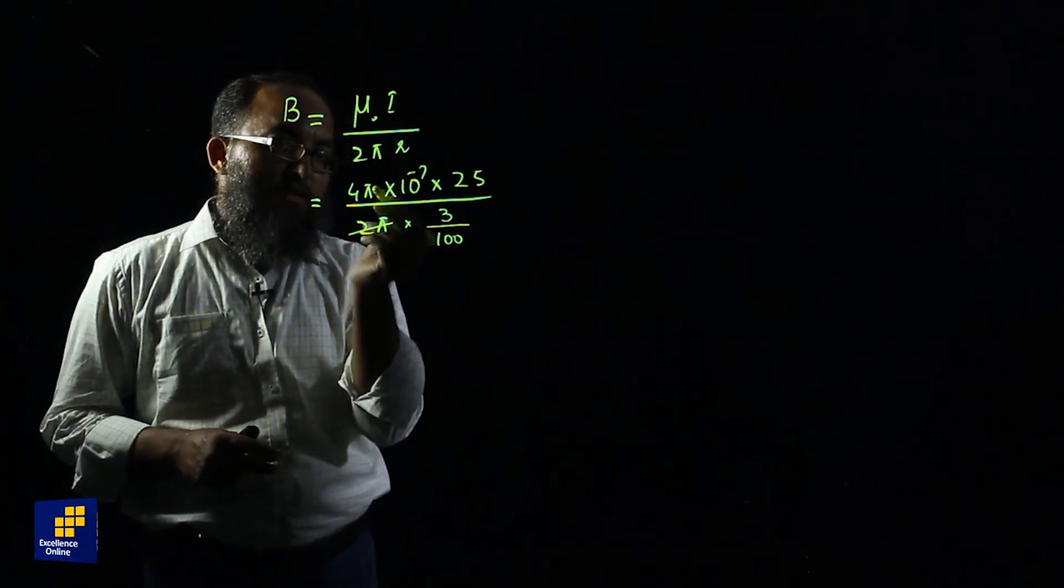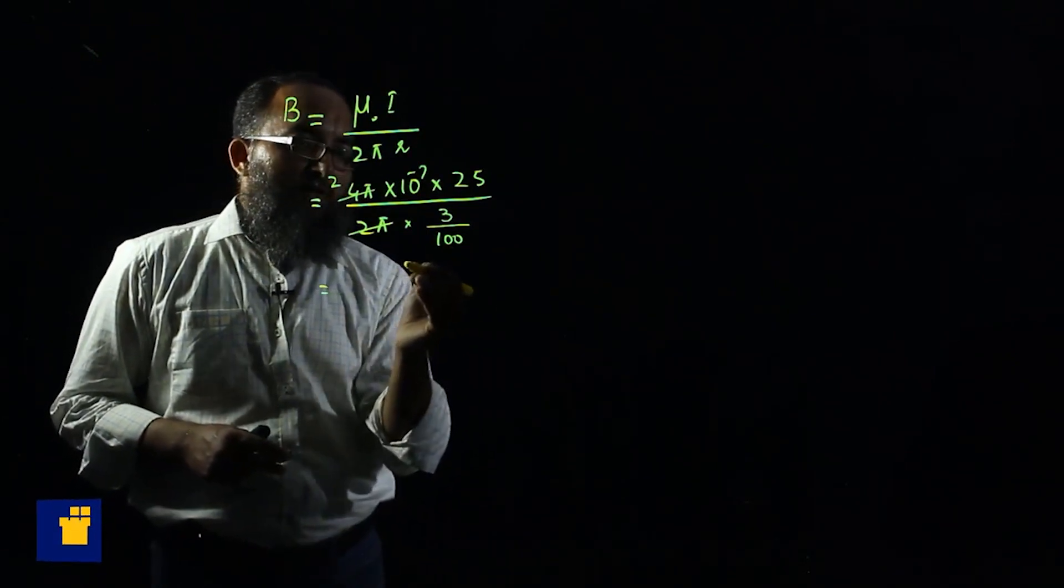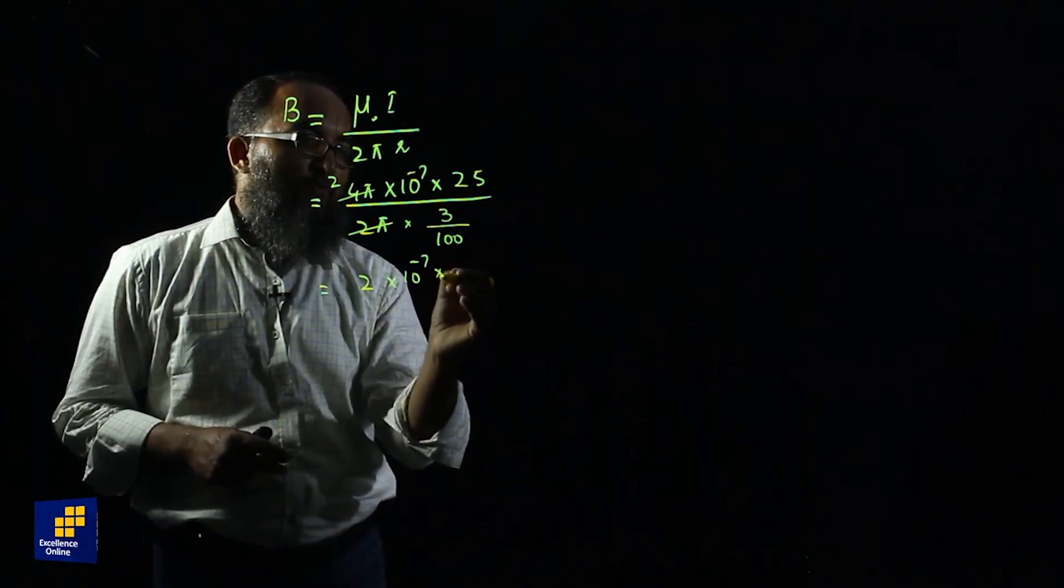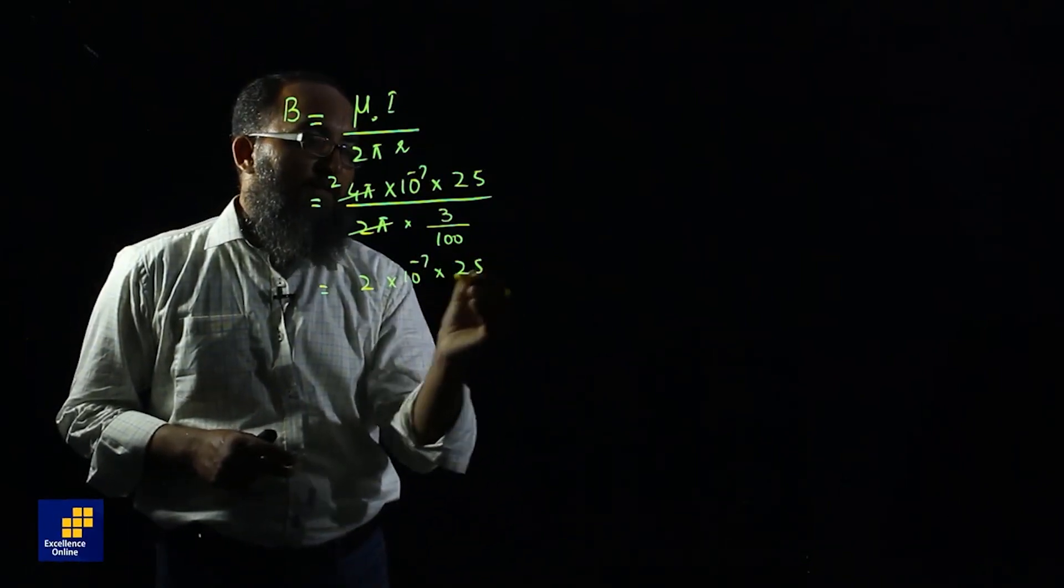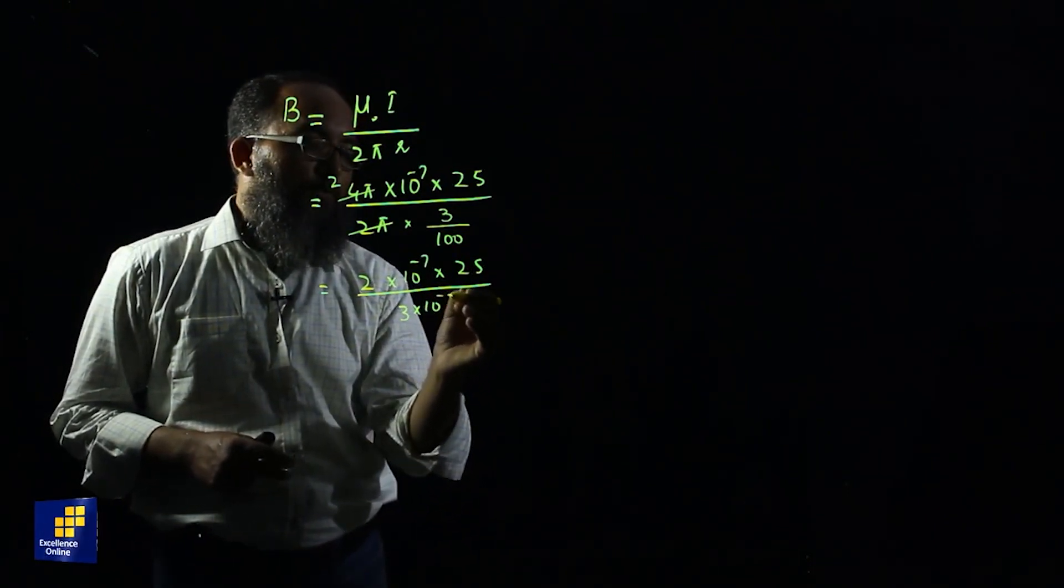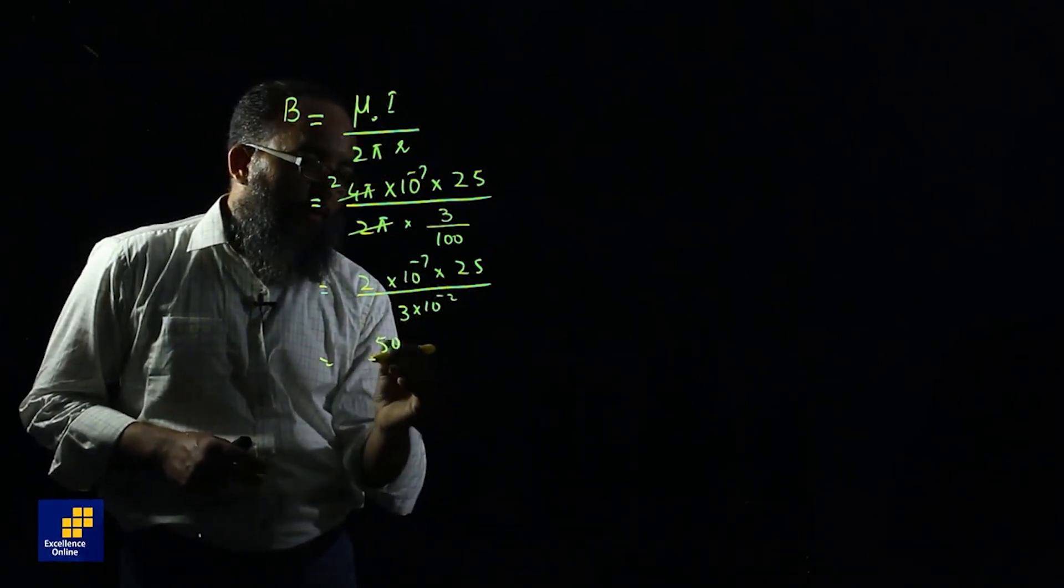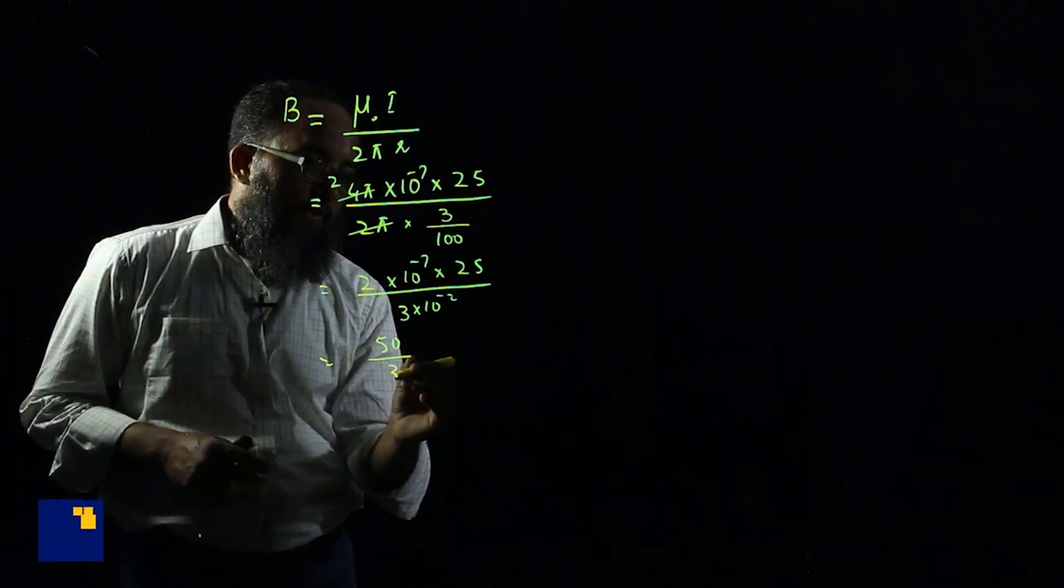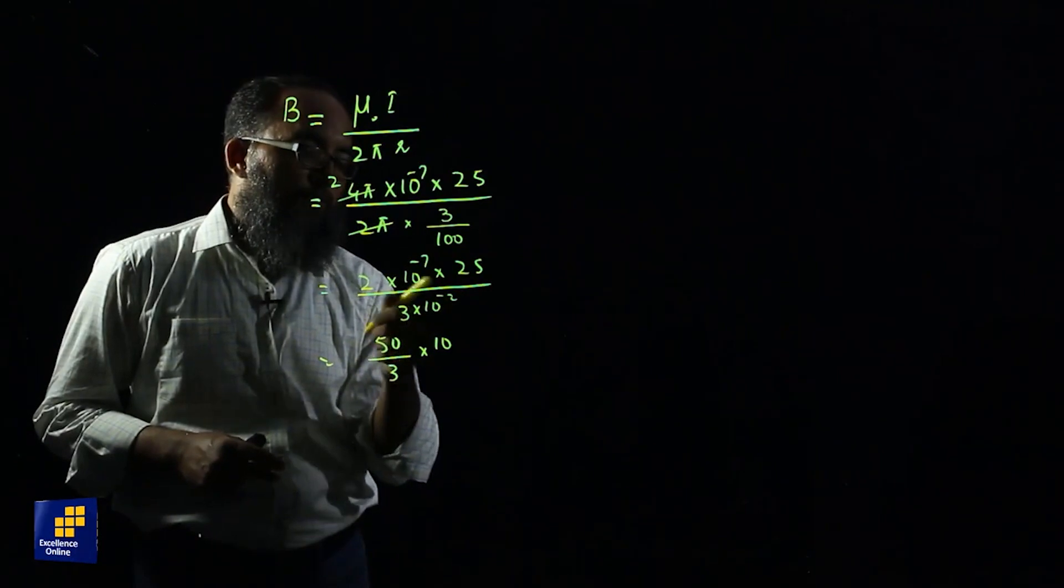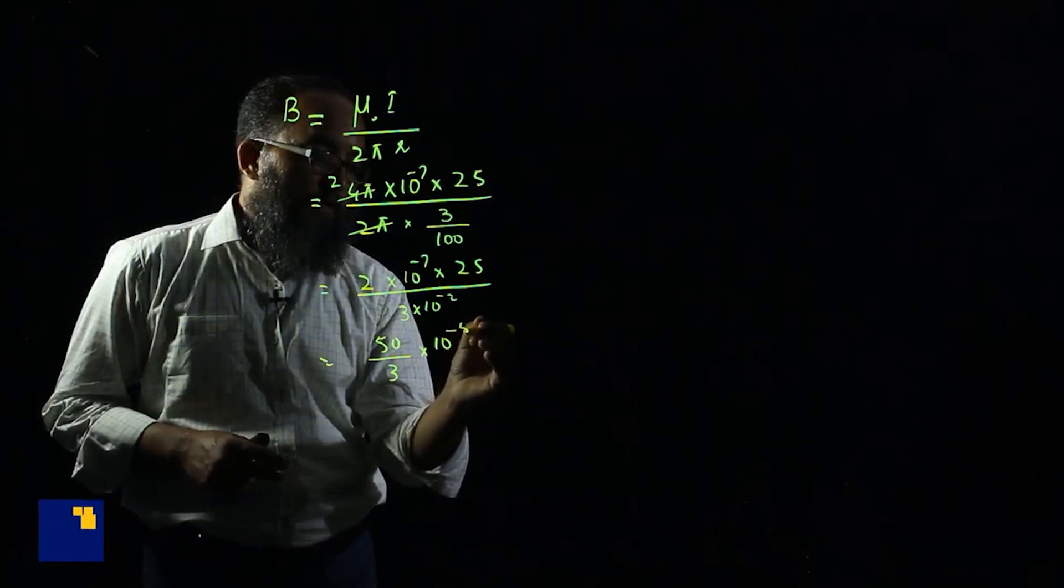Here 2 pi is cancelled. We get 2 exponential minus 7 into 25, divide by 3 exponential minus 2. That's 50 over 3 exponential minus 7 divided by 10 power minus 2. 10 power minus 7 divided by 10 power minus 2 will give 10 power minus 5.